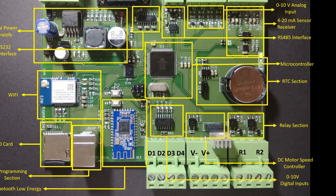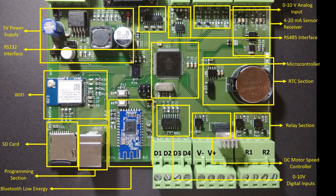The next section is the DC motor speed controller section. In this section we will see how to design the hardware for a DC motor speed controller and also how to control the speed of a DC motor. After that, the next section is the 0 to 10V digital input section, where we are going to read a sensor that provides its output as either 0 volt or 10 volt.